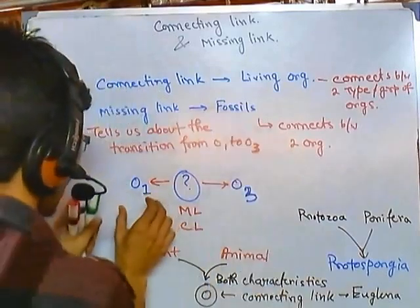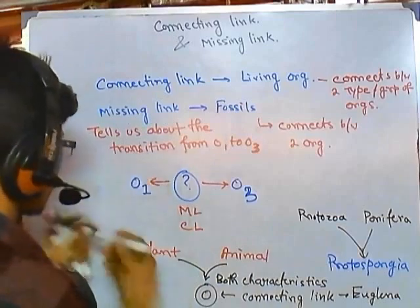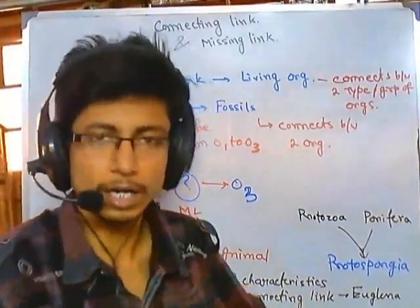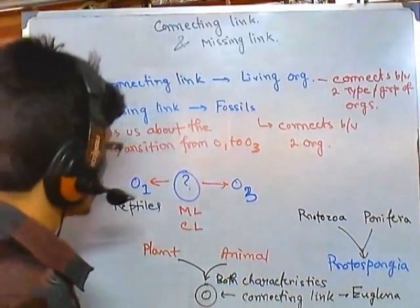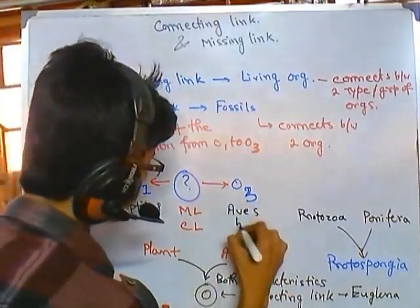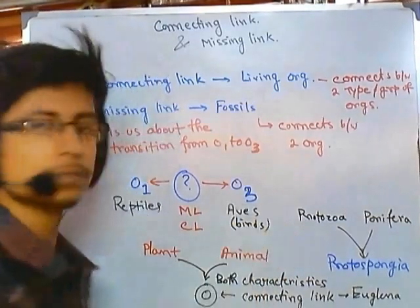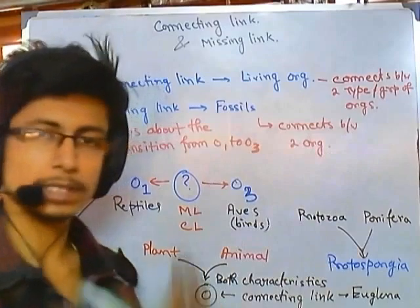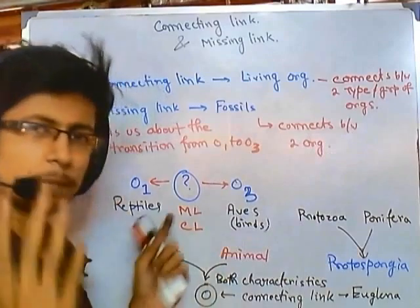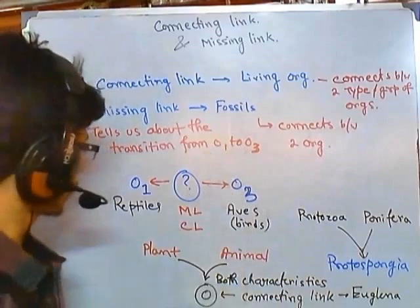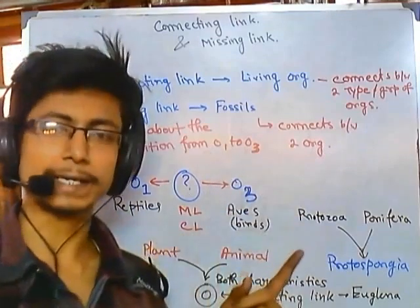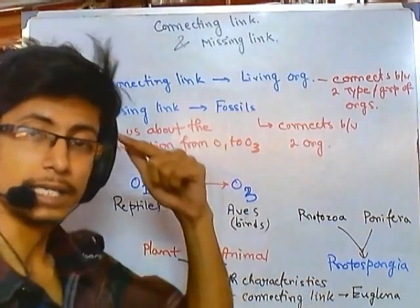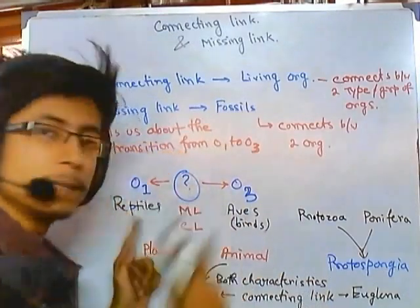For example, earlier we know that reptiles are having teeth, they have scale-like structures, they walk on the ground, and have forelimbs. Then we find birds at the other end. In between, we don't find anything — we find reptiles, we find birds, then further we find mammals. It was puzzling how bird-like structures arose from reptiles because there was no link. But when you find a fossil combining the characteristics of both reptiles and birds, it tells us that yes, there is a link between reptile and bird.